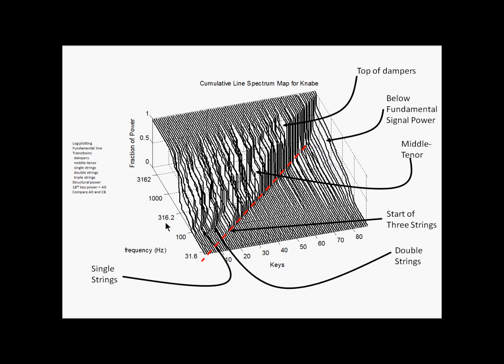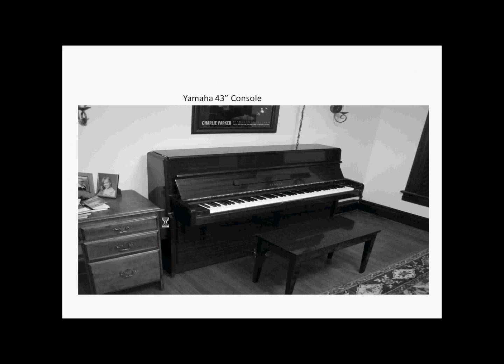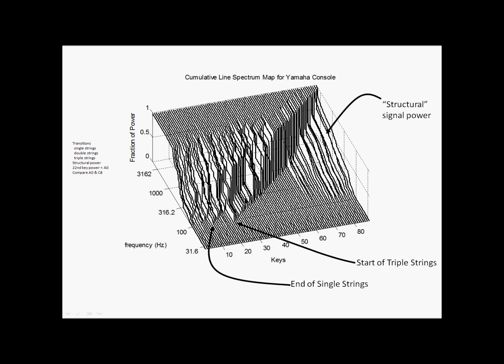You kind of beat the Kanabe to death. Let's move on to the Yamaha console. Similar structure: three-string notes, double string keys, triple. Here's a lot of structural power below the fundamental. The A0 looks about the same as the Kanabe. The C8 also looks similar. And also, for example, this particular beginning of the triple string keys has power at a frequency that is actually lower than the first appearing power over here for A0.